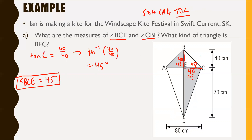Now for angle CBE — this angle in the other corner. You could use the same trig setup: opposite 40, adjacent 40, same ratio. Or you could realize that inside a triangle all angles add up to 180 degrees, so 180 minus 90 minus 45. Either way, angle CBE equals 45 degrees.